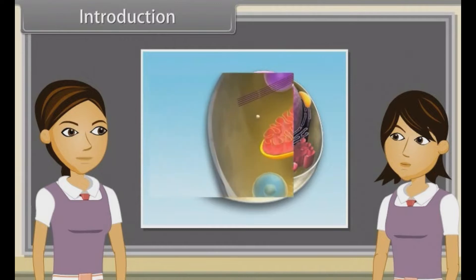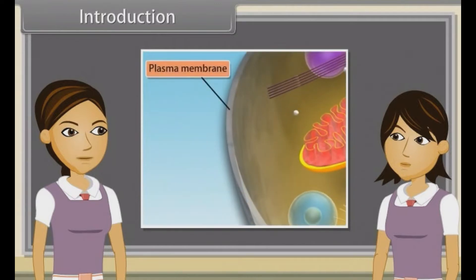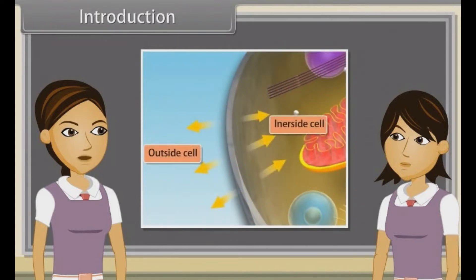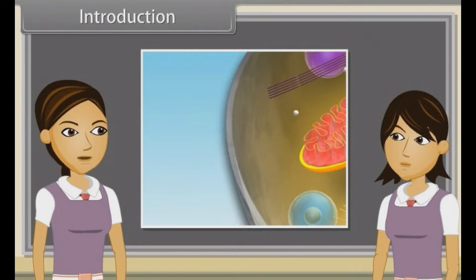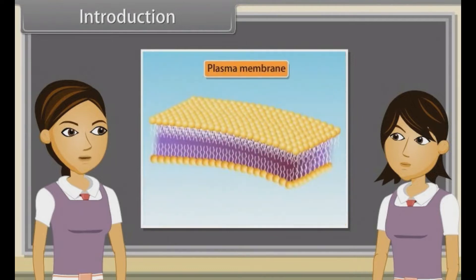Now we will discuss the structure of eukaryotic cells and also observe the structure and functions of cell membrane and cell wall.